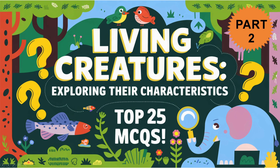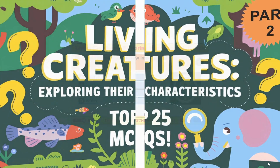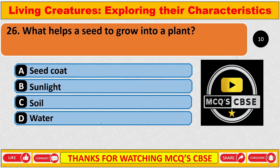Let's start. What helps a seed to grow into a plant? The correct answer is D: Water.